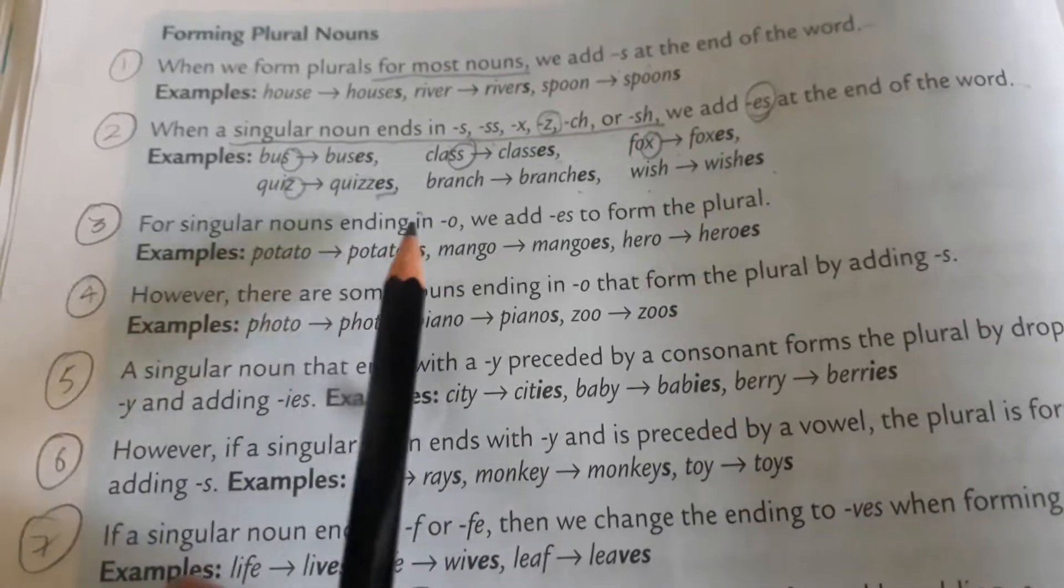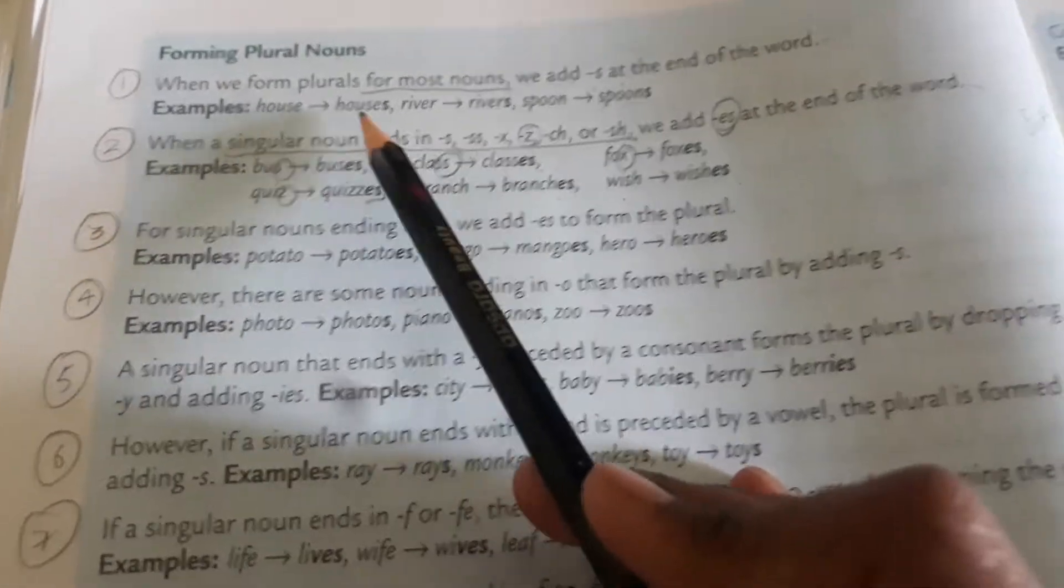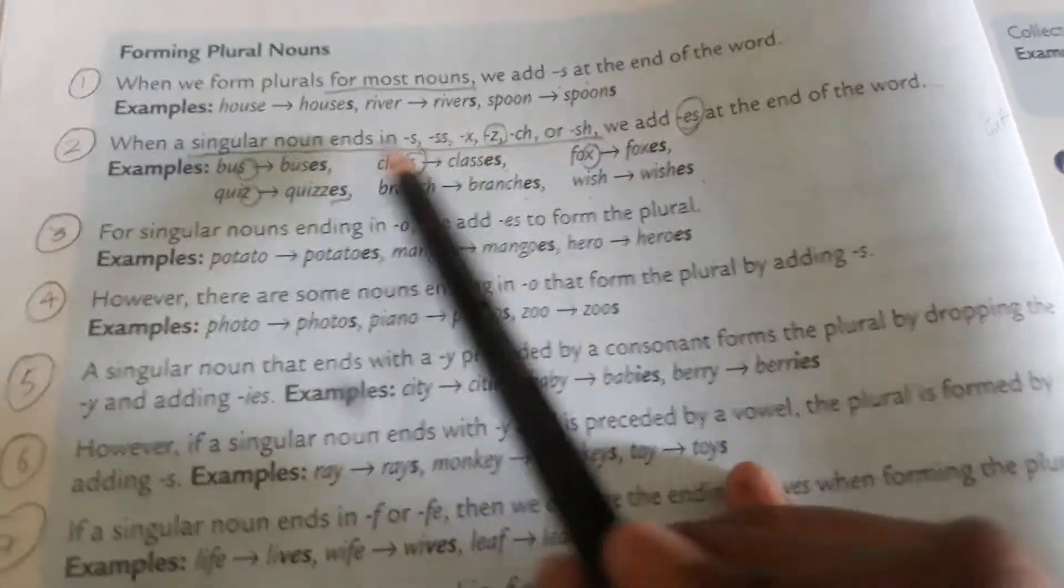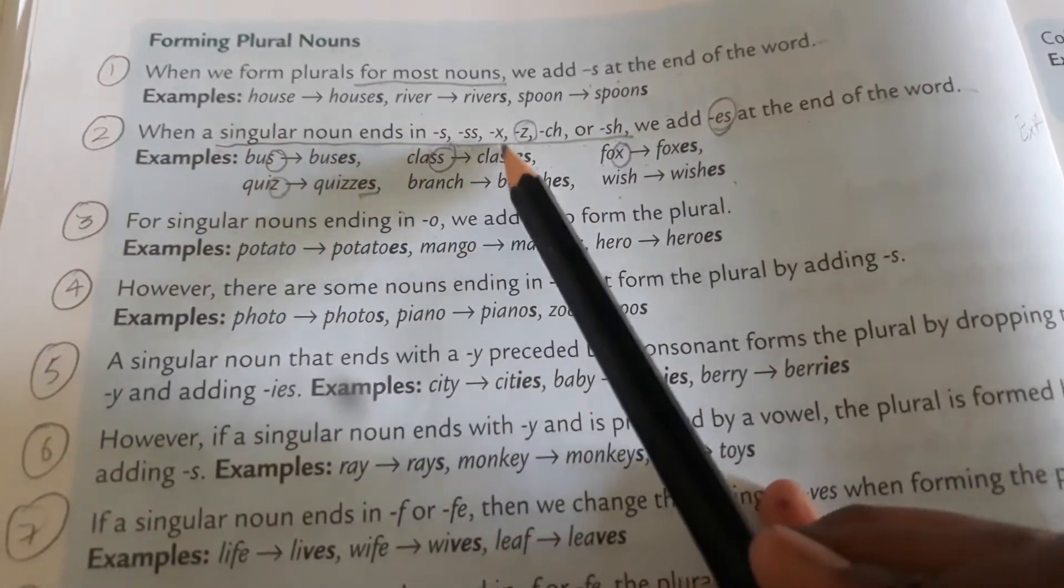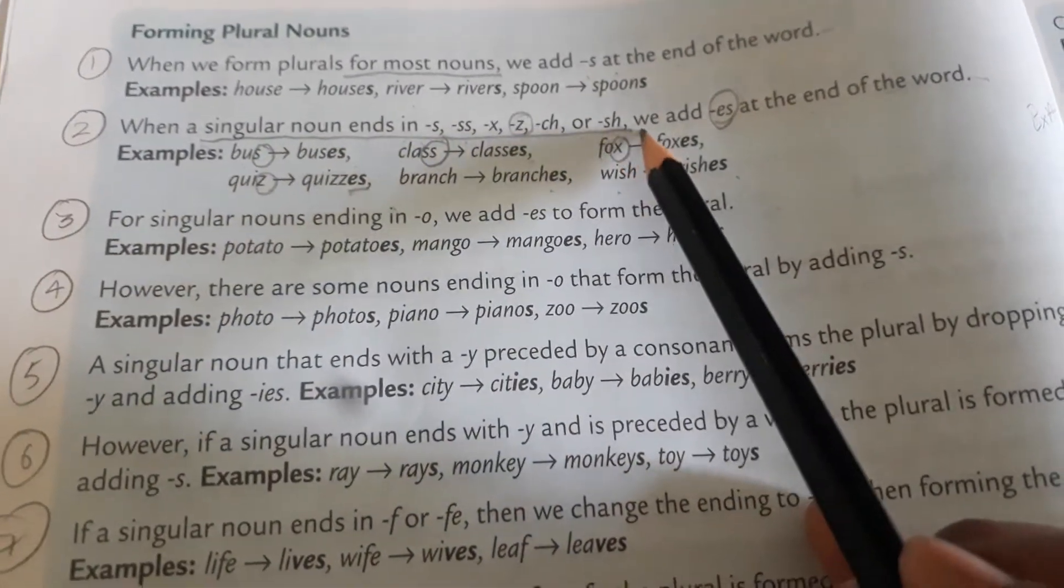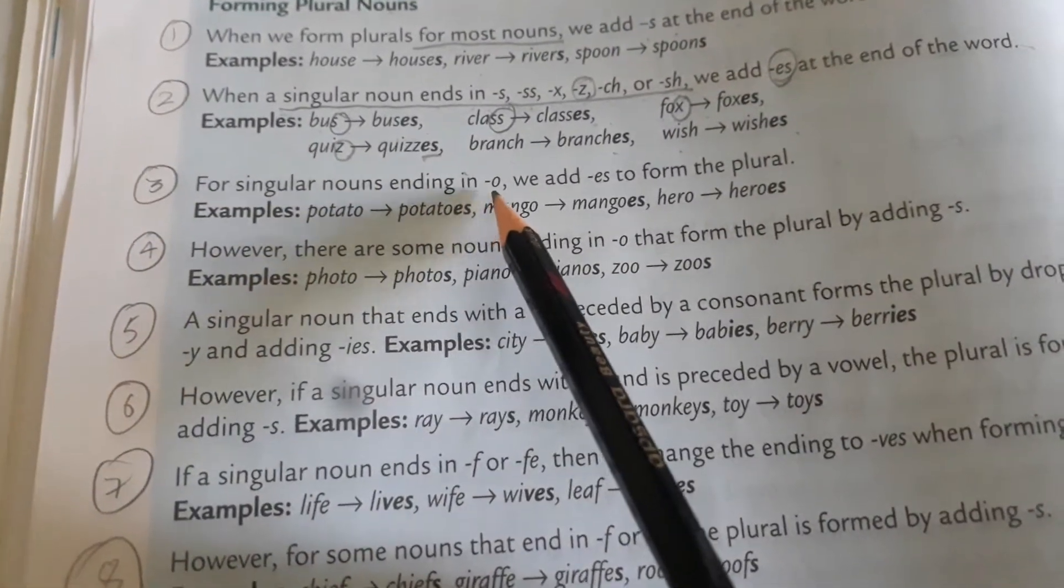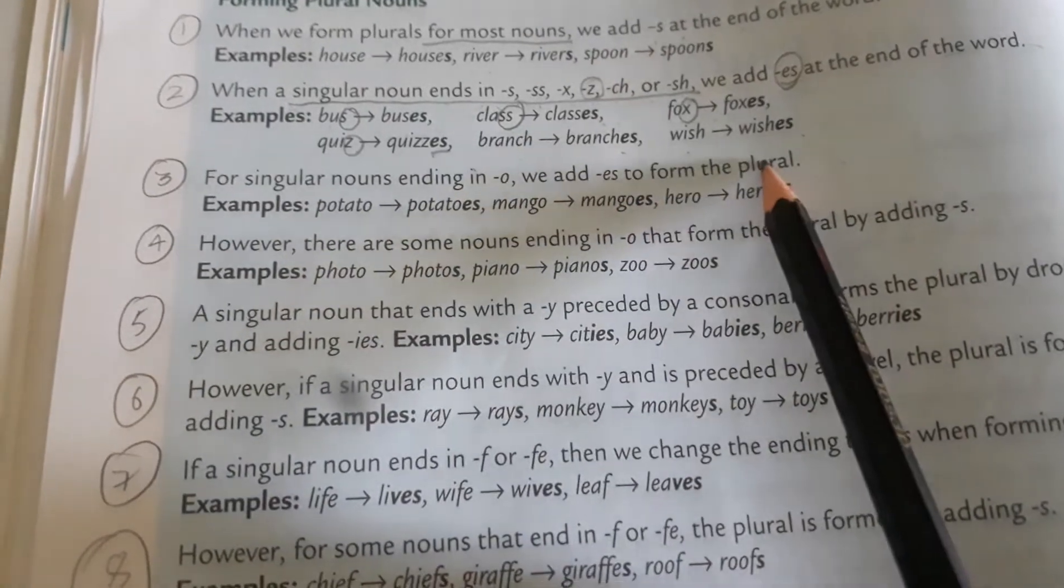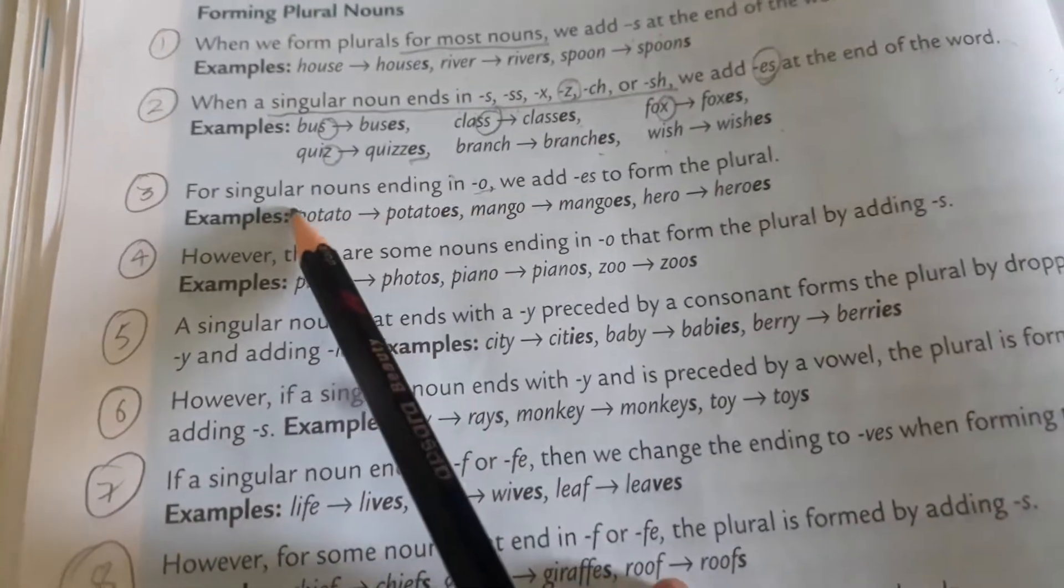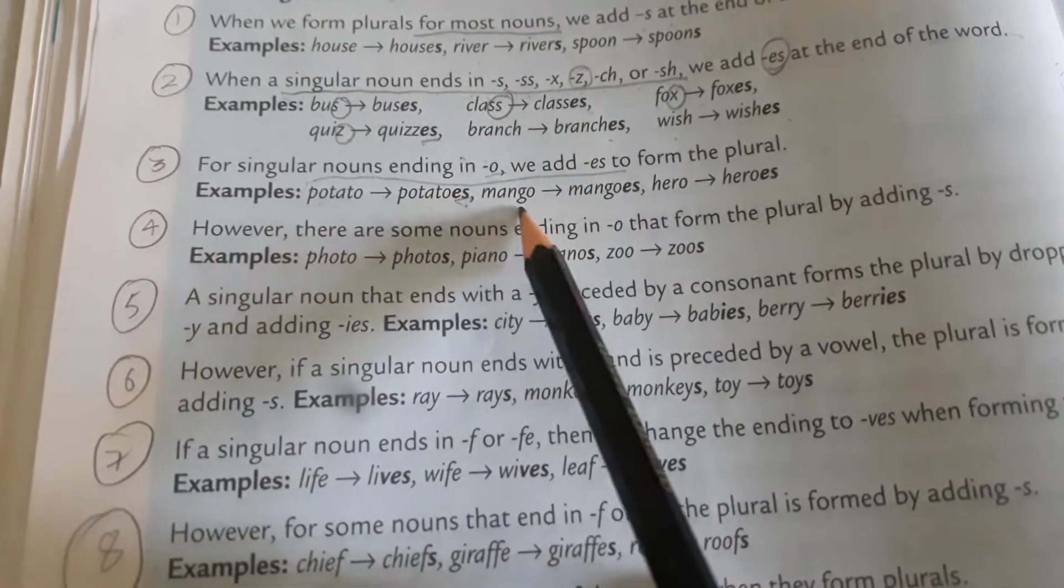Now come to the third. For singular nouns ending in O, we add ES to form plural. There are particular alphabets - if the word ends with such alphabets, then we add ES. Singular nouns ending with O, we add ES. Potato becomes potatoes, mango becomes mangoes.